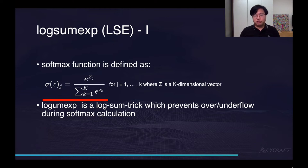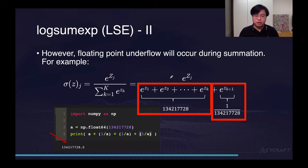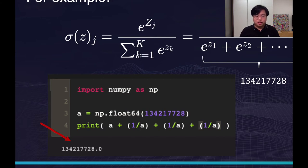Here's the example of underflow. Let's say the sum of the denominator is 134,217,728, and the last part is its reciprocal. What will happen if we try to add them together? Here's the benchmark code. As you can see, I set variable a to 134,217,728 and then try to add it with its reciprocal. The result is exactly the same as A. It's quite shocking, right? This effect is called underflow.